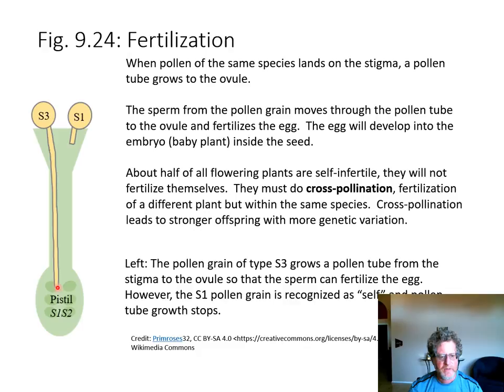About half of all flowering plants are self-infertile, so if a pollen grain from within the plant lands on its own stigma it won't grow a pollen tube and fertilize itself — that way the plant maintains genetic variation. A pollen grain from the same species but a different plant will grow the pollen tube down and fertilize the egg. If it's from a completely different species, it also won't grow a tube at all.